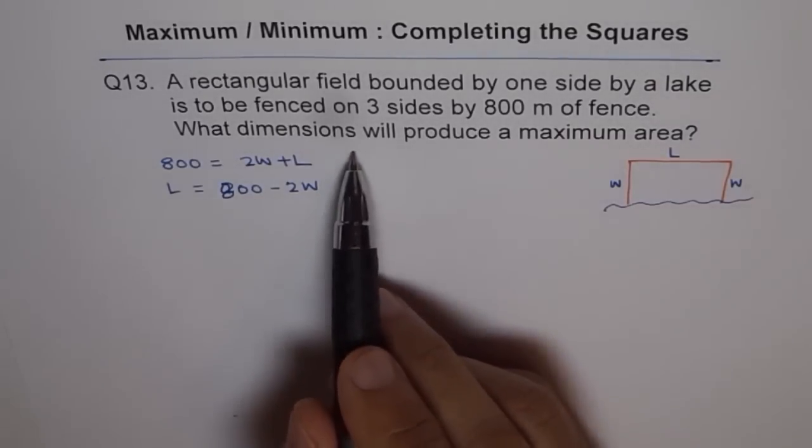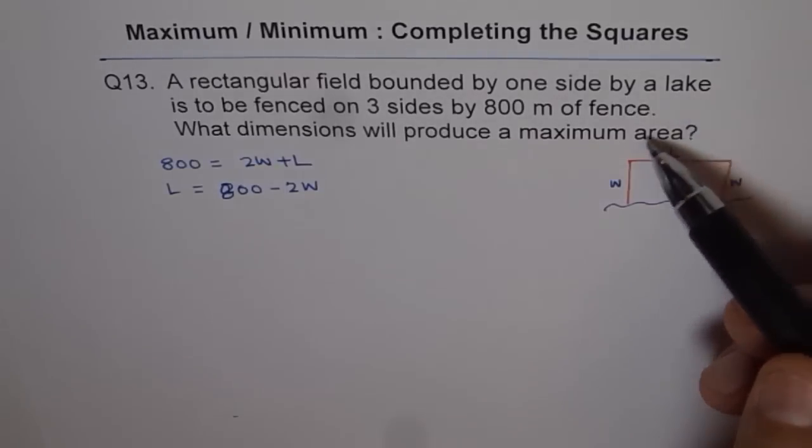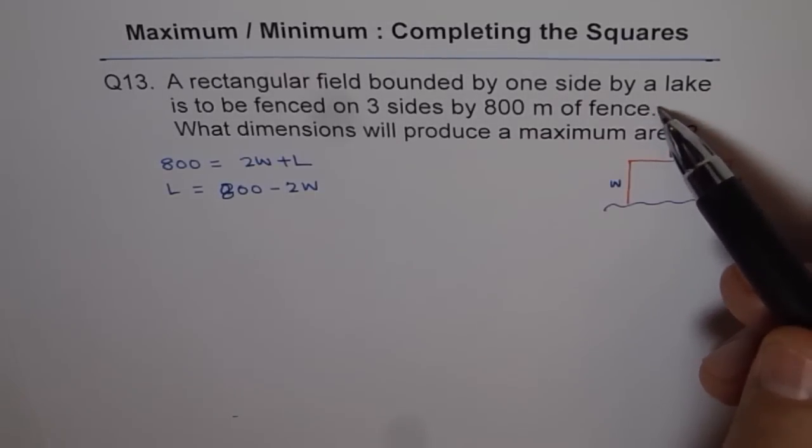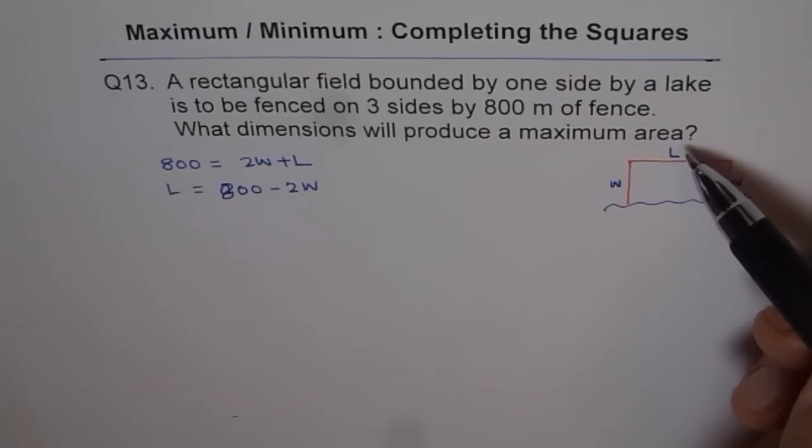Now what dimensions will produce maximum area? So in the equation you will observe there are two different conditions given. One helps us to relate one variable into the other and the other helps us to find the equation to get the result.